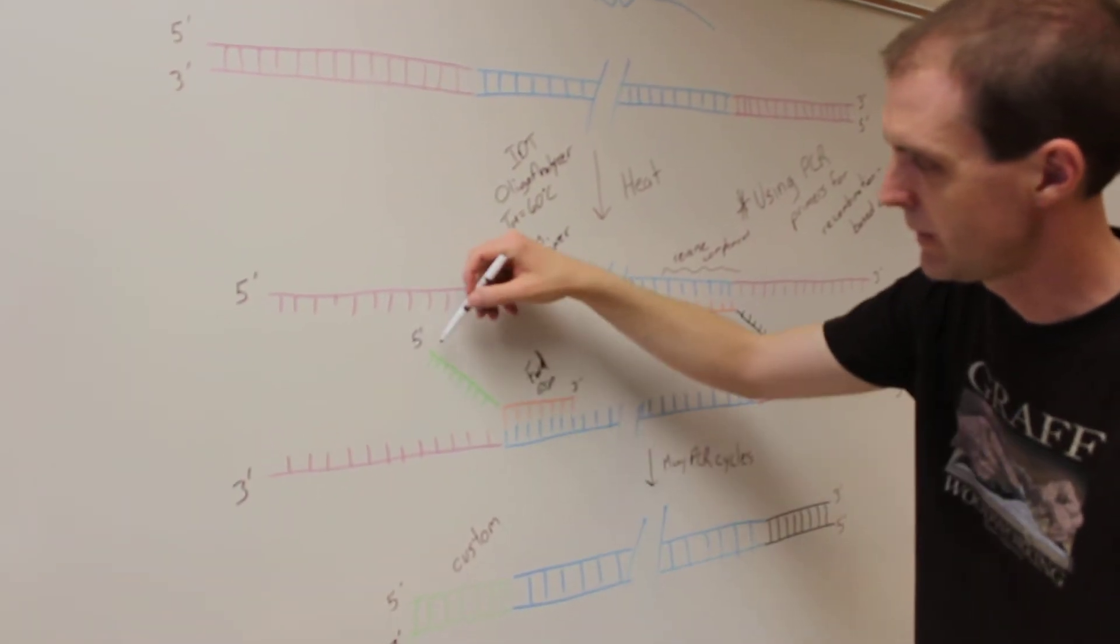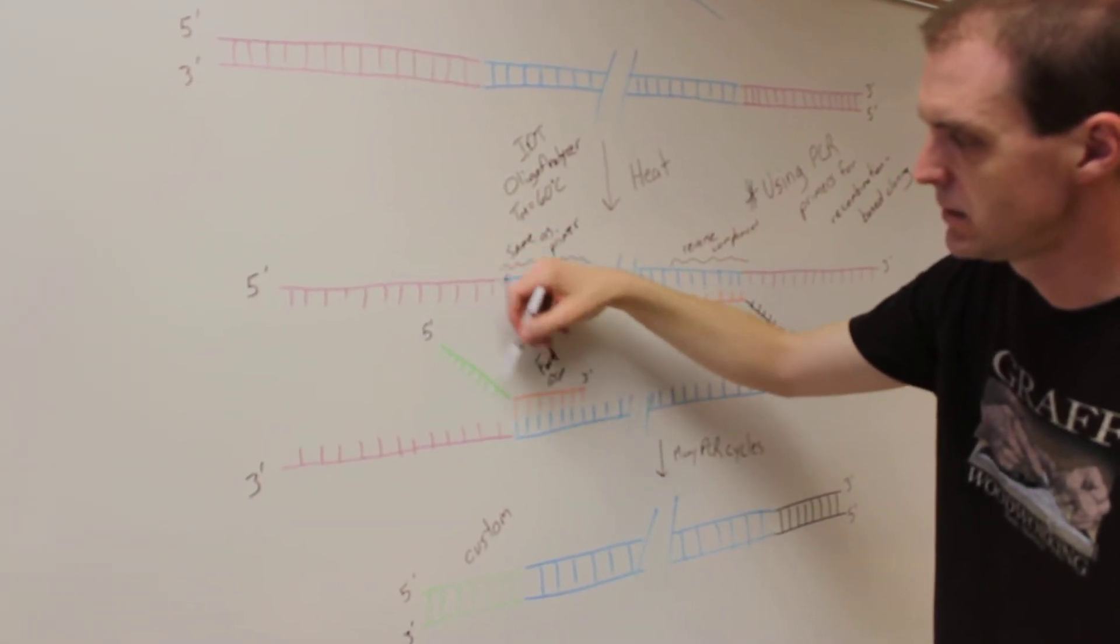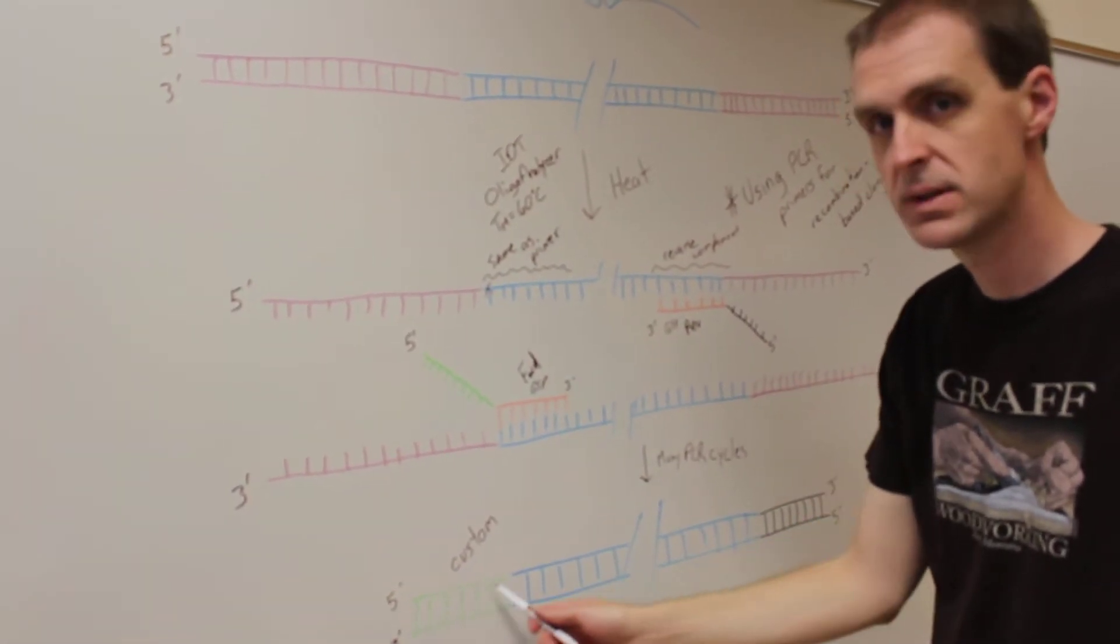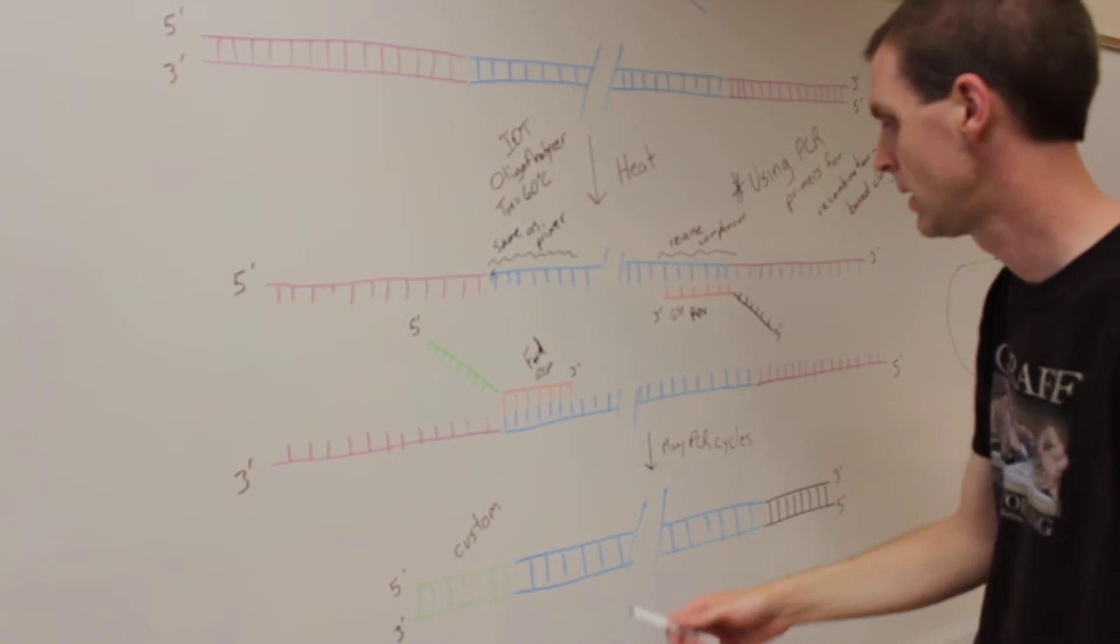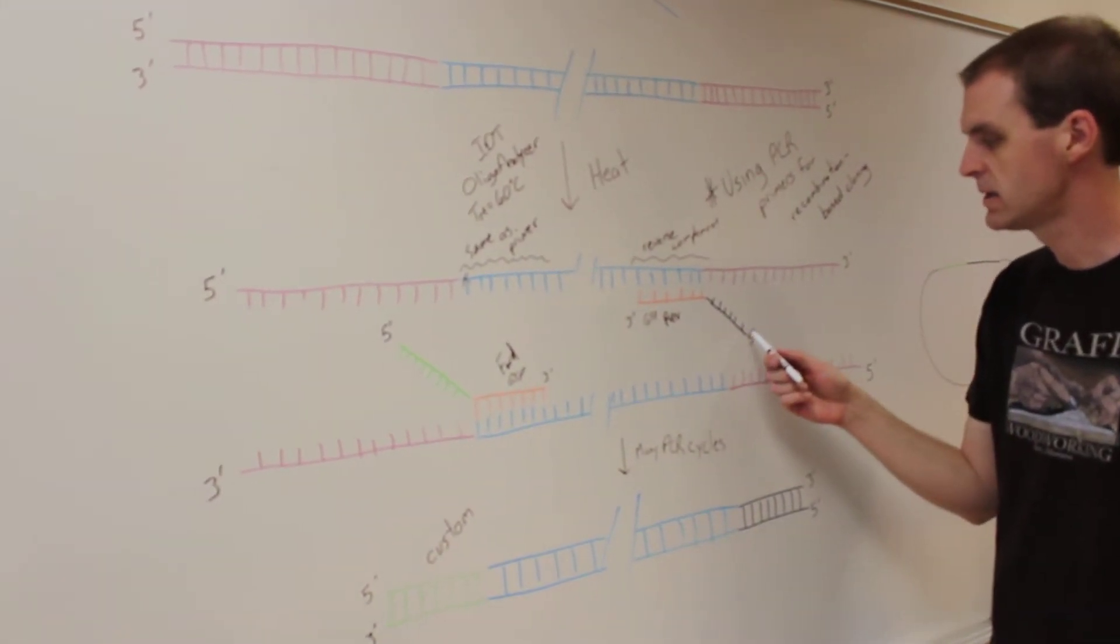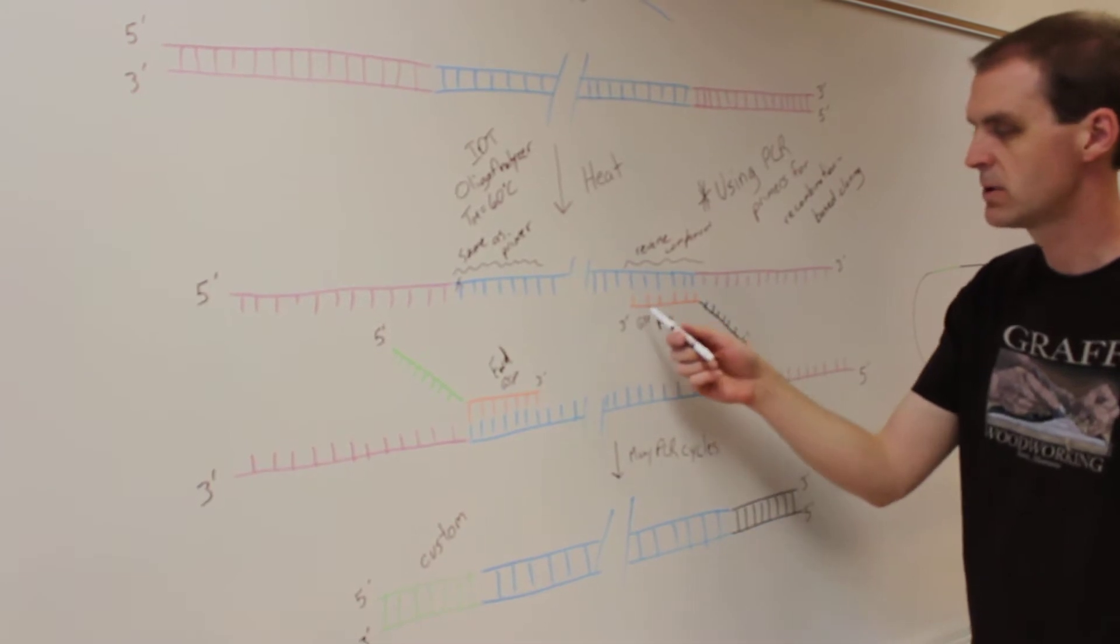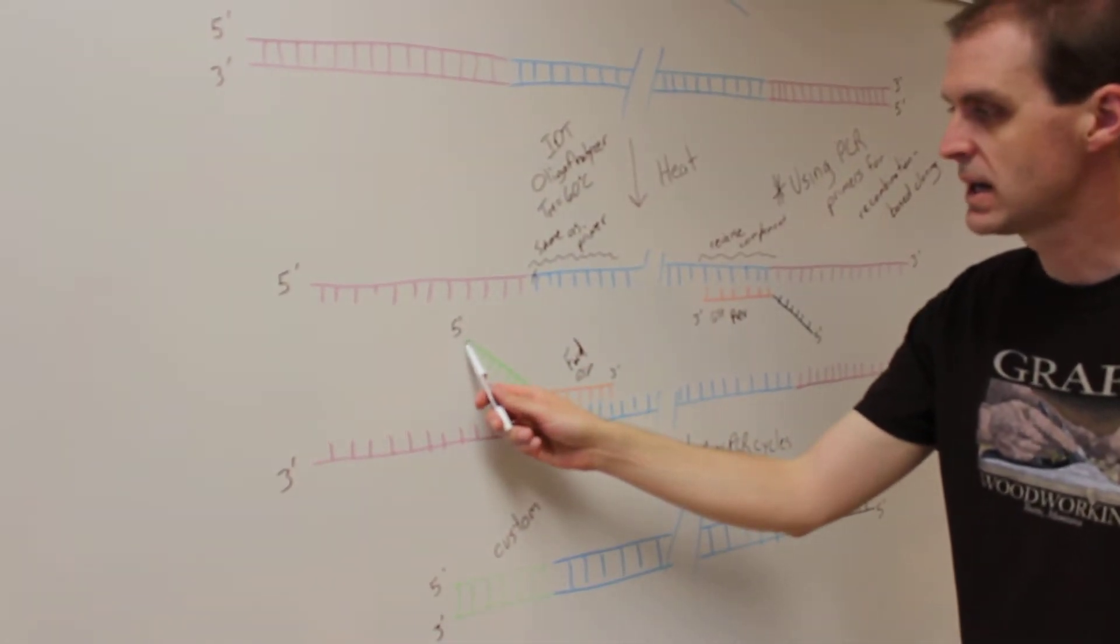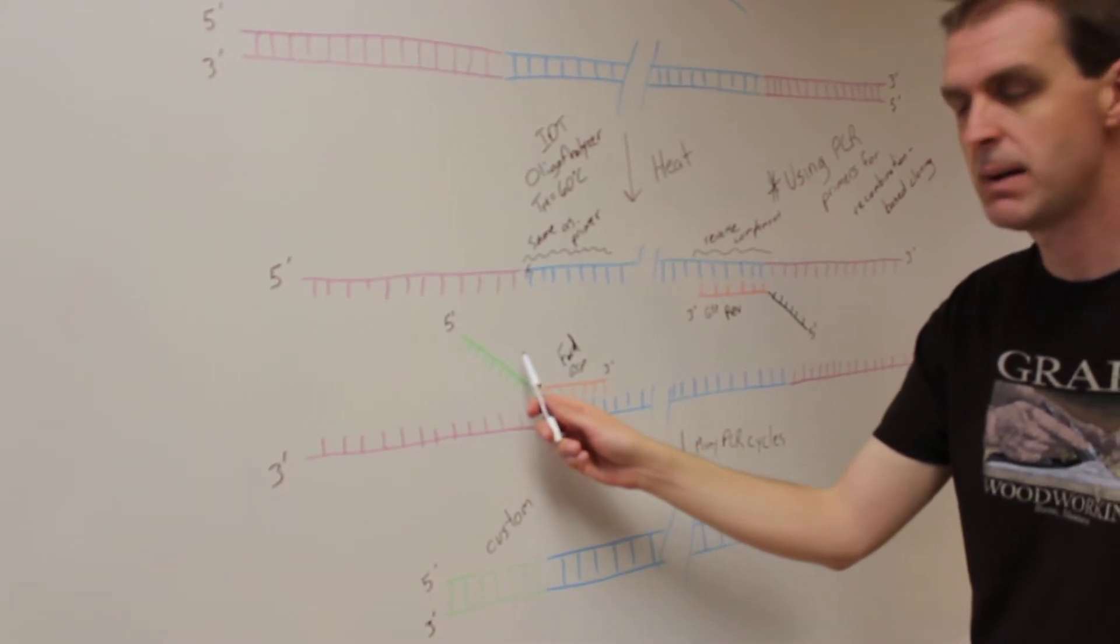So over here, the sequence is shown in green, so that's going to be adding green sequence to your PCR product. Over here, this reverse primer is black, and then it goes into orange. Notice on both cases, the custom sequence is at the 5' end of the primer.